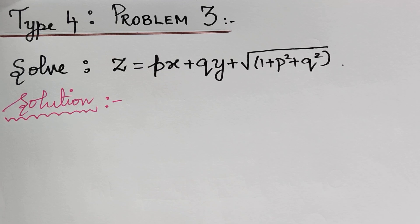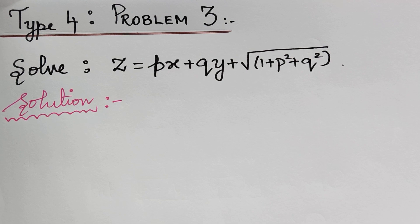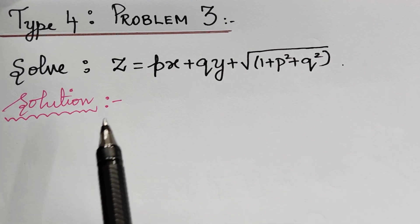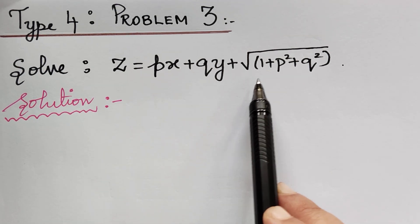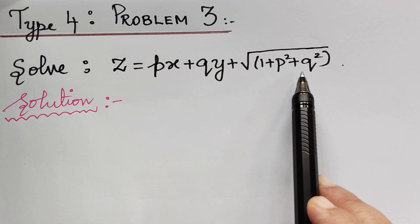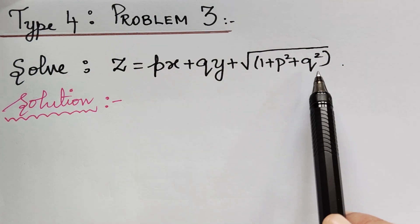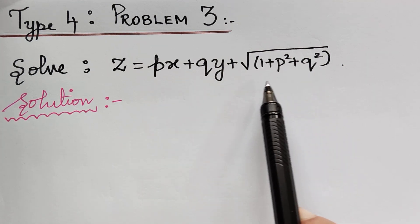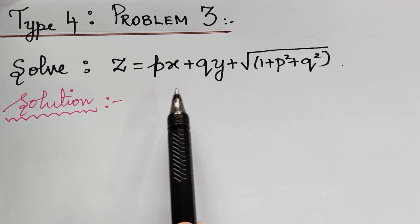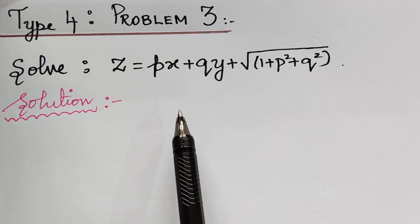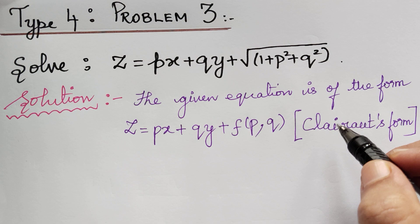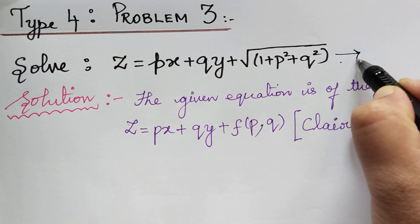Dear students, under the topic nonlinear partial differential equations, we are solving problems under Type 4. Here we have Problem 3, which is very significant from the examination point of view. The question is to solve z = px + qy + √(1 + p² + q²). We understand that the given equation is in the form of Clairaut's form, so the first step is to find the complete integral.